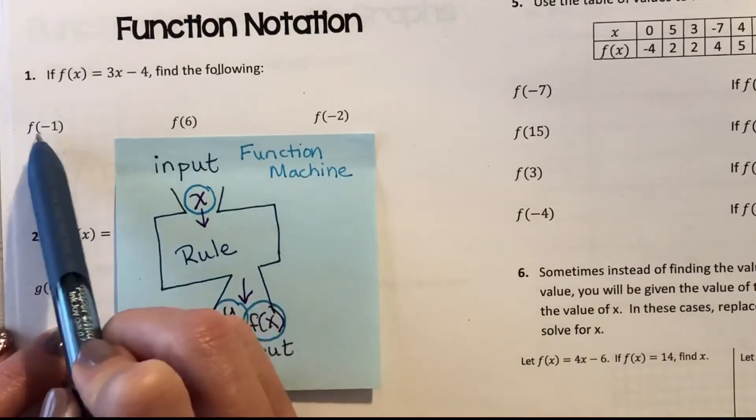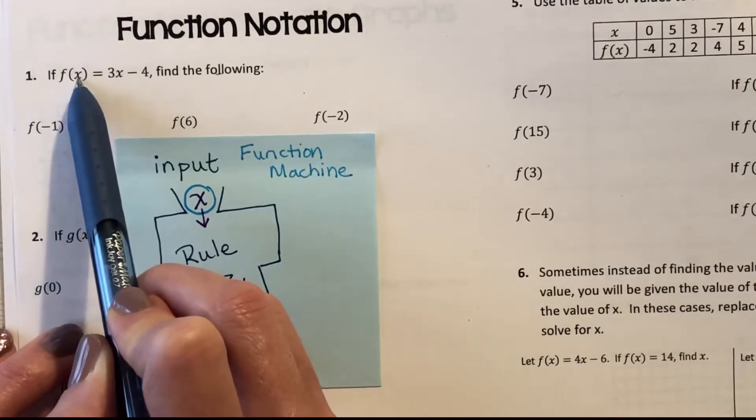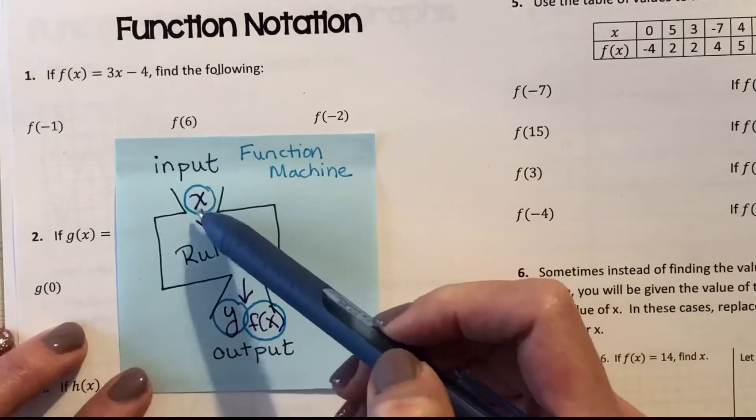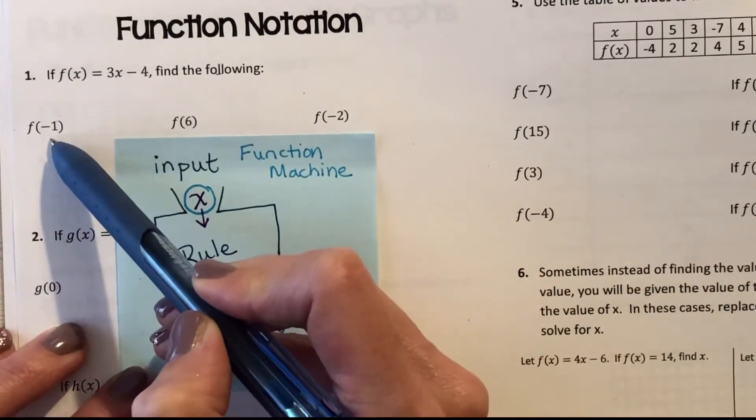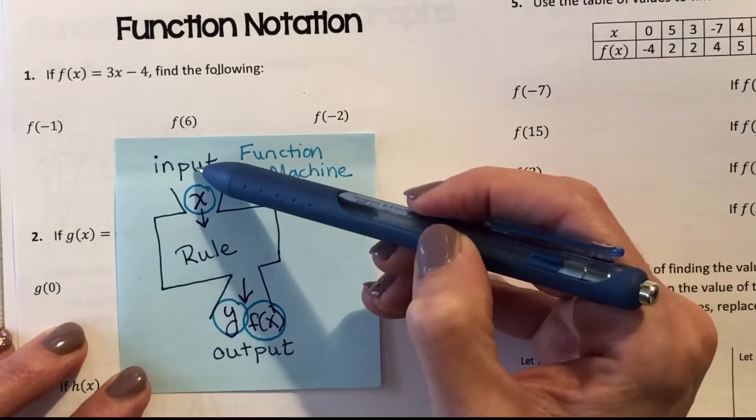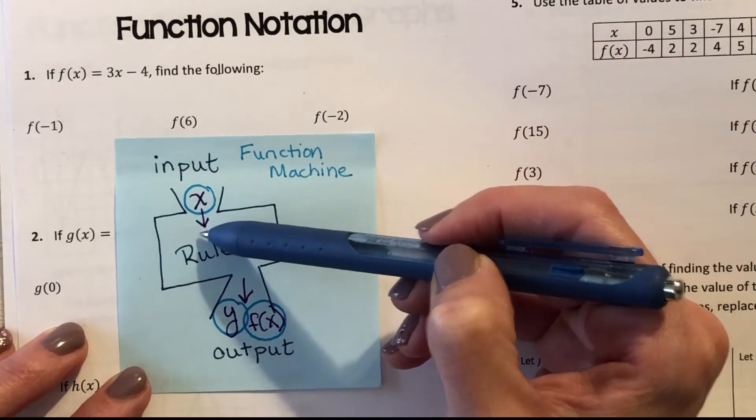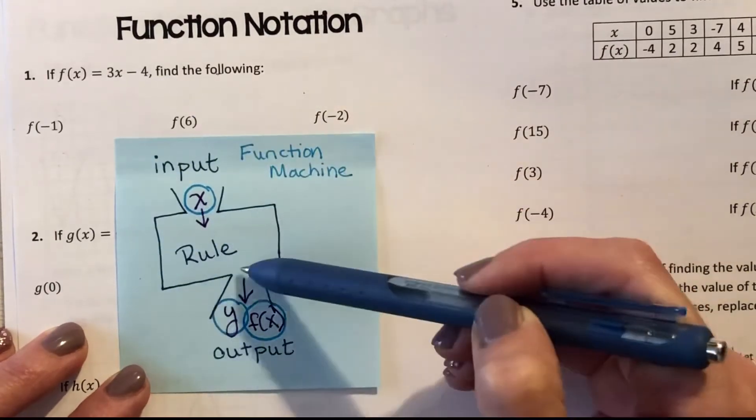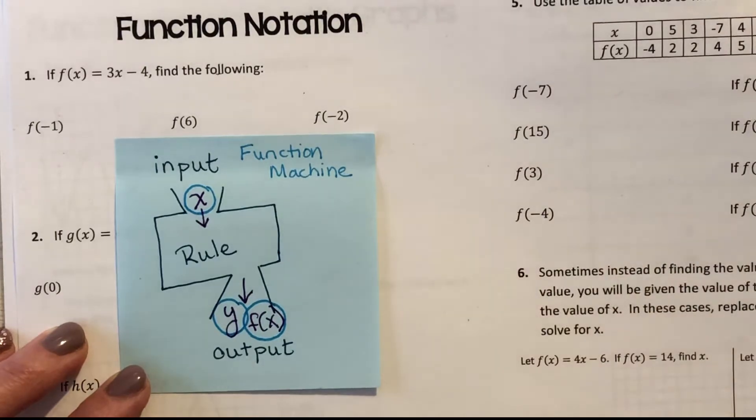This is saying whatever I replace x with, that's my input. In this case, f of negative 1 is like saying I'm popping negative 1 into my rule. I do my rule, which is 3x minus 4. What pops out as a result?